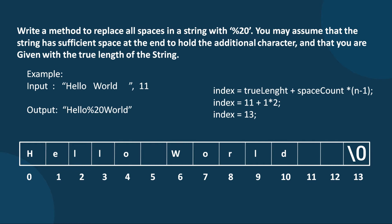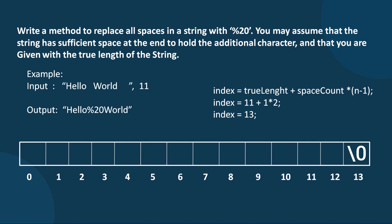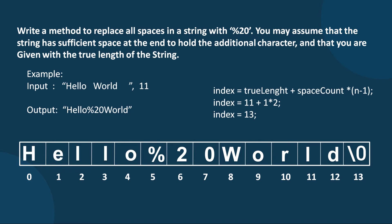We use a two-scan approach. In the first scan we move left to right to count all void spaces. In the second scan we move right to left, inserting values one by one. When we encounter a space, we insert '0', '2', and '%' in reverse order. We do the same for 'Hello', and the final result is 'Hello%20World'.